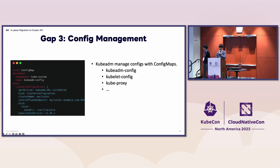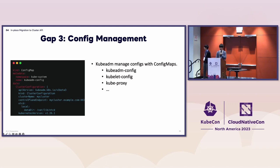The third gap is configuration management, which is specific to kubeadm. In order to manage its configuration, kubeadm uses the Kubernetes API — it stores ConfigMaps in the kube-system namespace, like kubeadm-config. kubeadm cannot properly handle nodes without such configurations, so to avoid the issue, we prepare such ConfigMaps based on the cluster setup of the legacy cluster to be migrated.